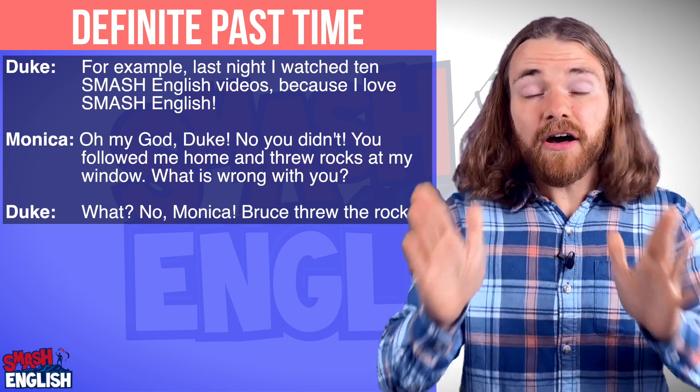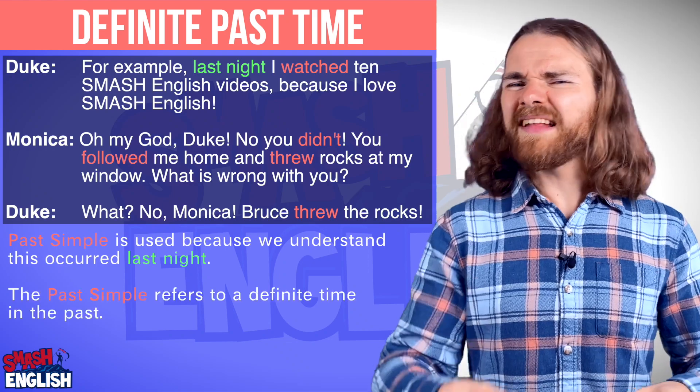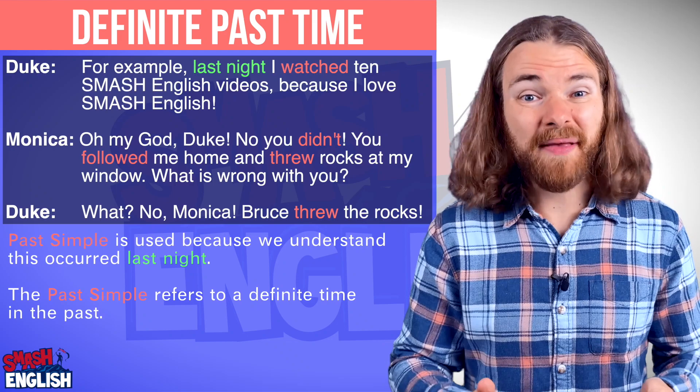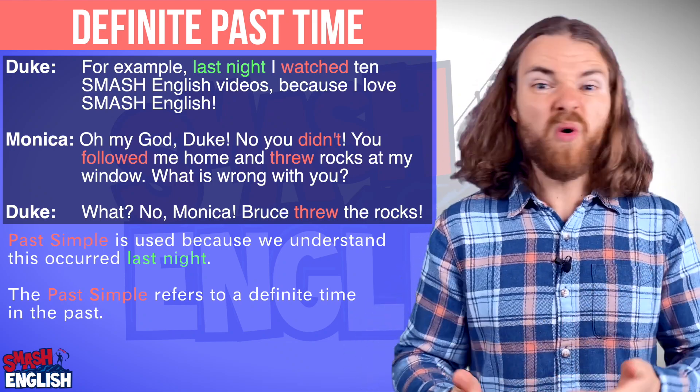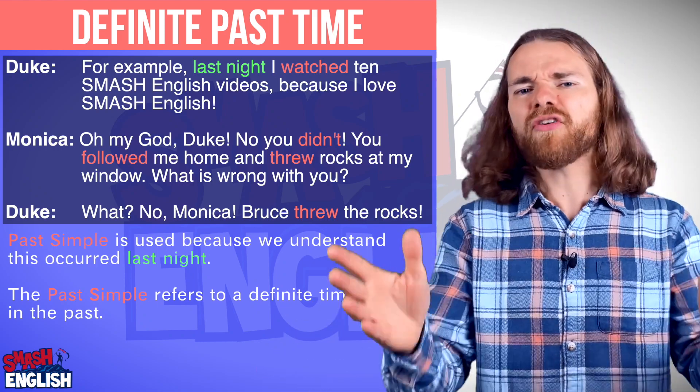You followed me home and threw rocks at my window. Bruce threw the rocks. That is a lie — they were not rocks, it was a brick. So here the past simple is used because we understand that this situation occurred last night. We use the past simple when we definitely know exactly when this thing happened. This can either be explicitly mentioned in the conversation, or it can simply be part of the shared knowledge between the speaker and the listener.